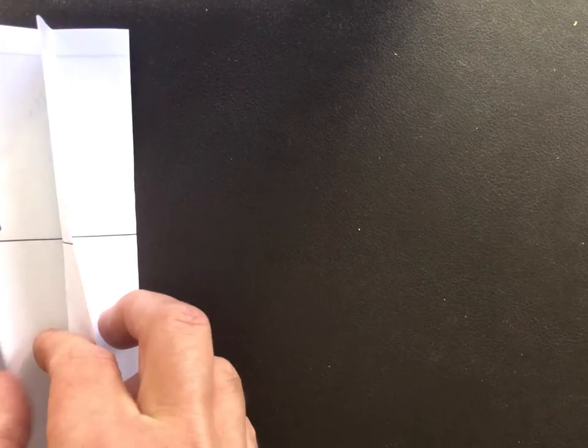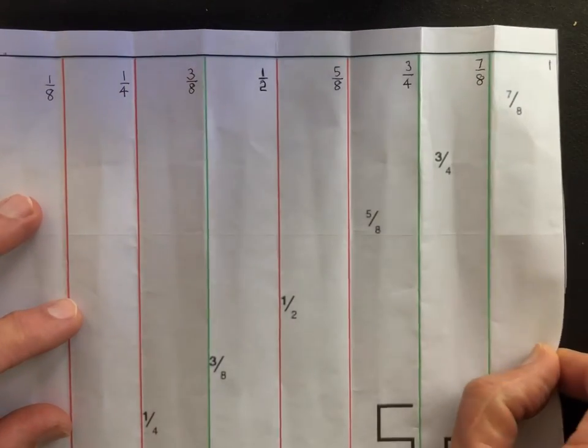Proceeding in the same way, a third fold will divide the page into 8 parts and the order of the fractions in the fold becomes interesting, quite different from the order of the unfolded page.